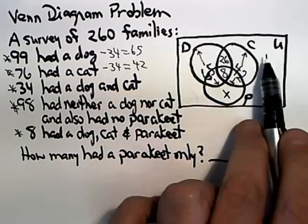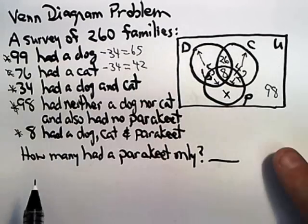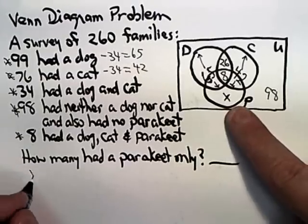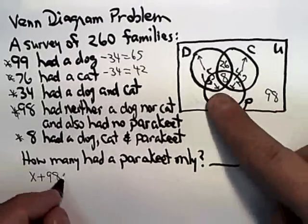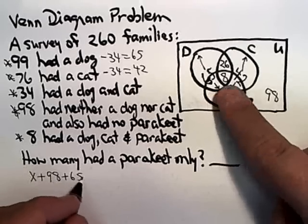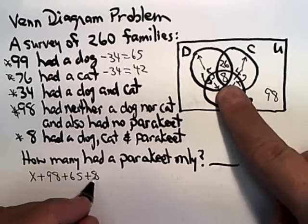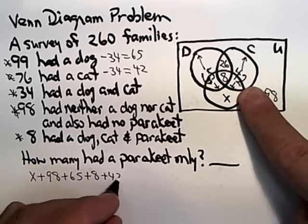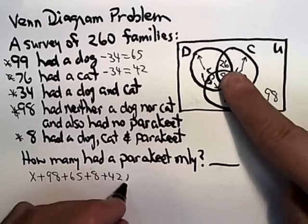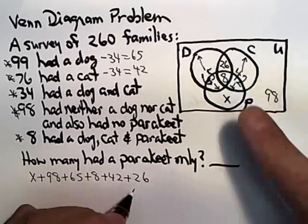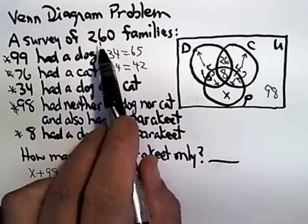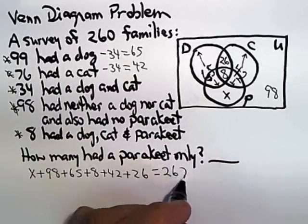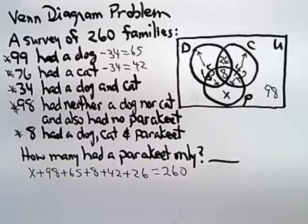So, what I know is that everything in this universal set has to add up to 260. So, if I just start adding X plus 98 plus 65 plus 8 plus 42 plus 26, I think I've added everything, I need to come out with a final answer of 260. So, that allows me to solve for X.